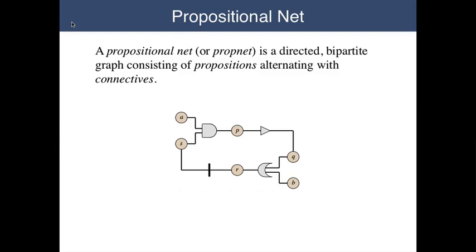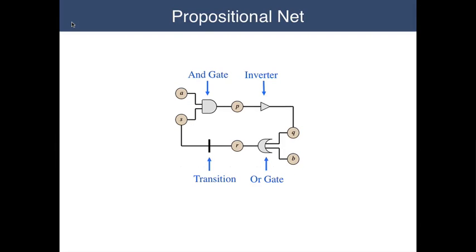And there are four connectives, the gray and black nodes in the graph shown here. In basic prop nets, there are four types of connectives, and they're all present in this case. There is an AND gate on the upper left, an inverter on the upper right, an OR gate on the lower right, and a transition on the lower left.